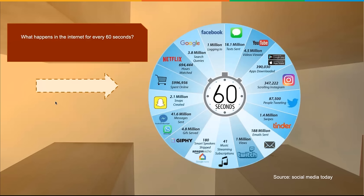According to Social Media Today, a lot happens every 60 seconds — there's a lot of snaps, clicks, text, videos watched, pictures being taken, voice-activated activity, tweets, emails, and swipes. There's a lot going on here in 60 seconds, a lot of activity on the internet.